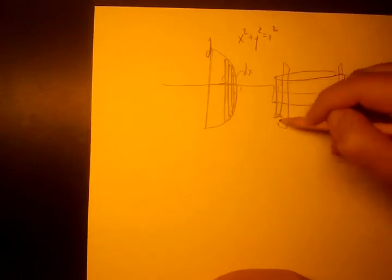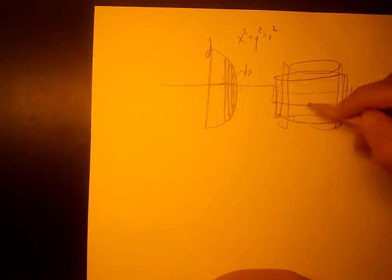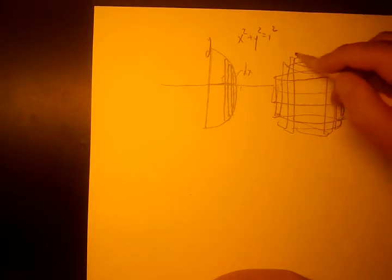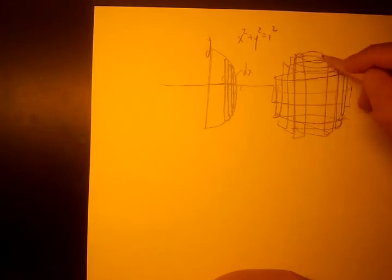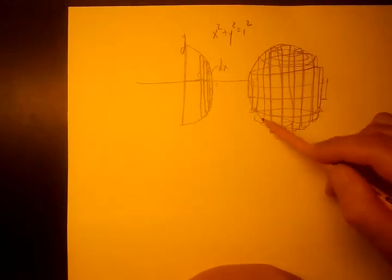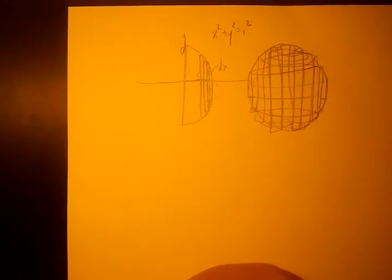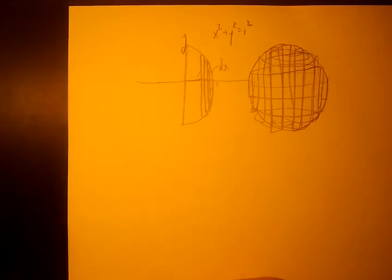We're eventually going to get a shape that looks more and more like this. And as you can see, as we take these bigger and bigger rectangles, this shape is going to resemble a solid sphere. If we sum up all of these volumes of all these cylindrical shells, we're going to get the volume of the sphere.